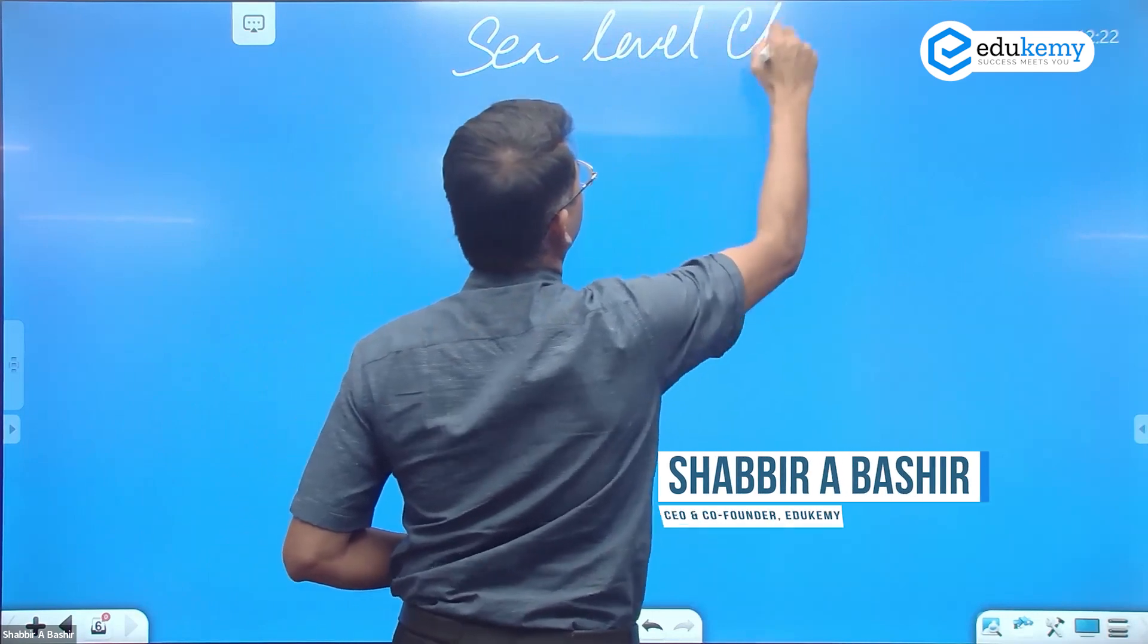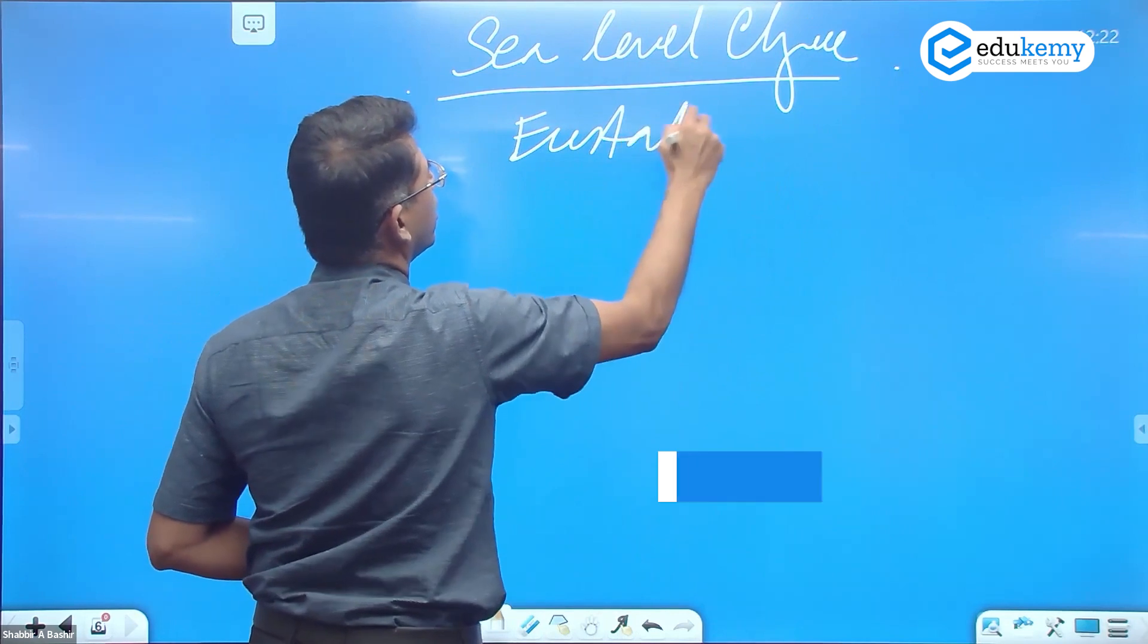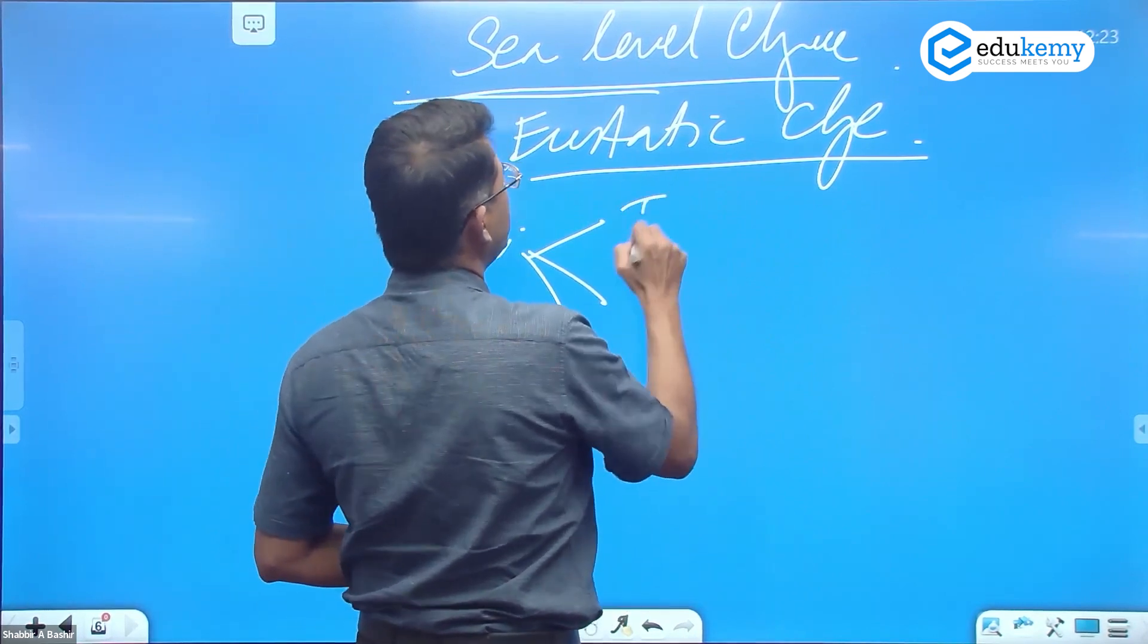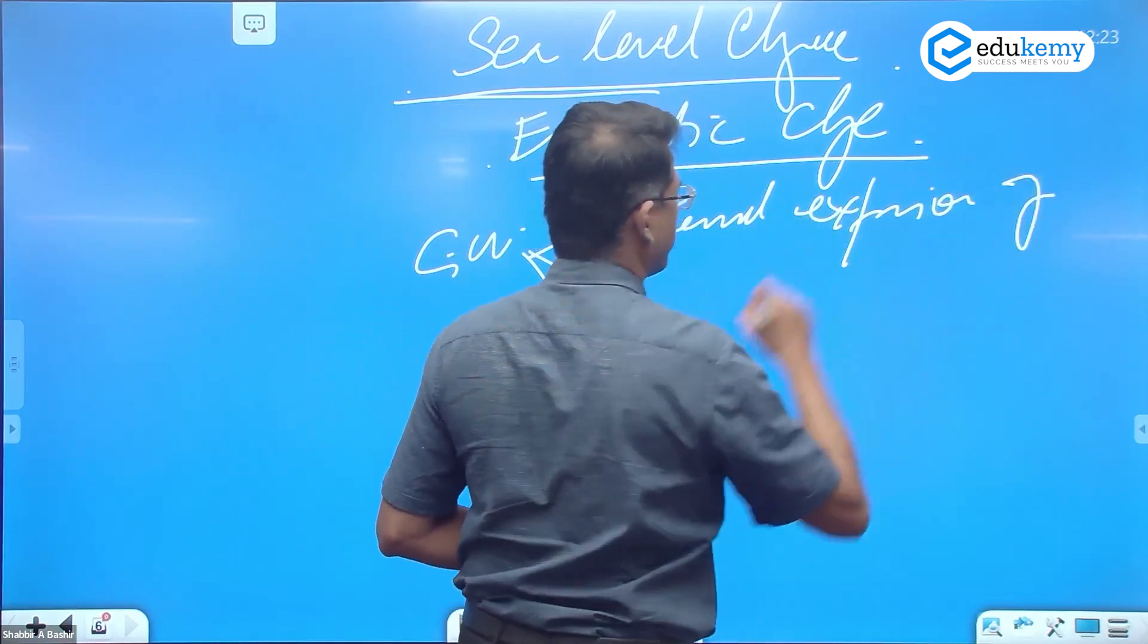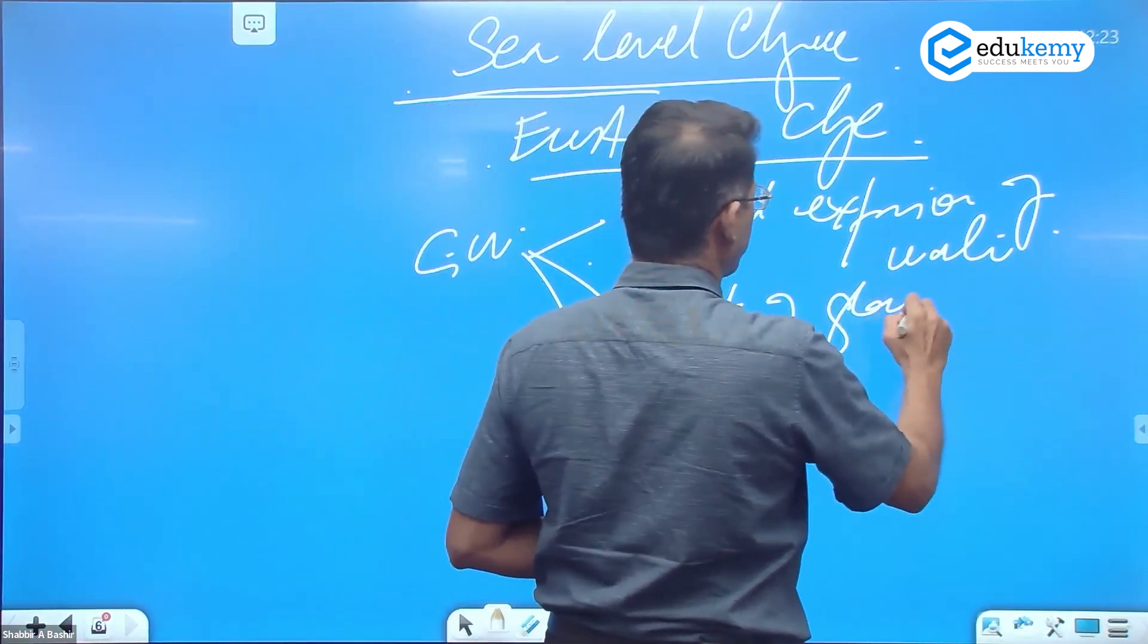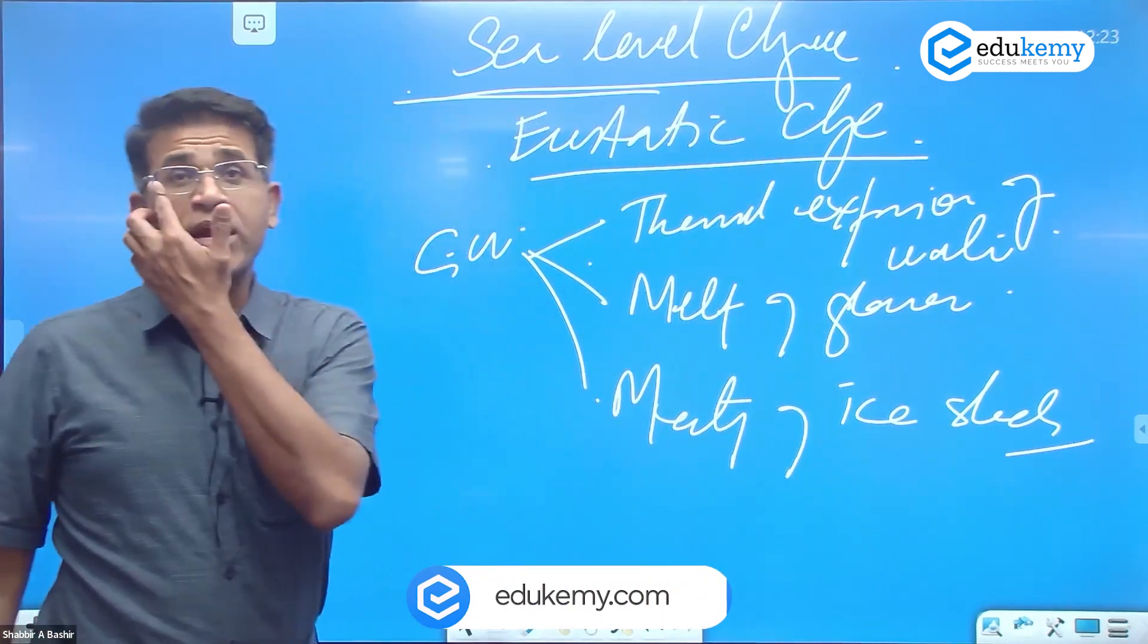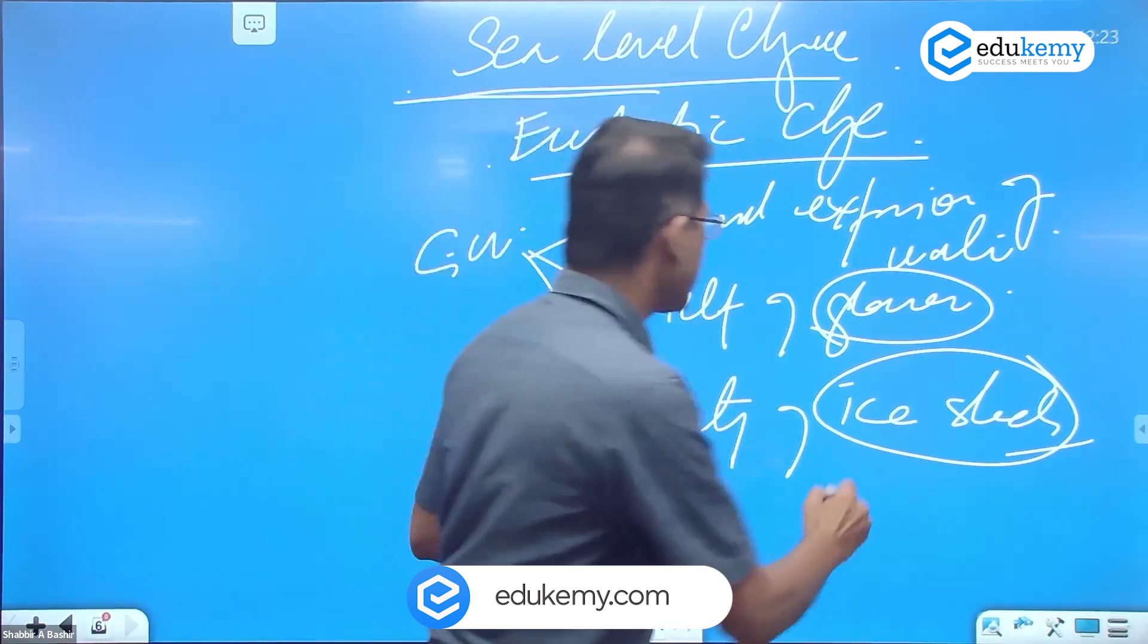Sea level change, we call sea level change as eustatic change. Global warming does three things: it results in thermal expansion of the waters, it results in melting of the glaciers, it results in melting of the ice sheets. I hope you can differentiate glacier kya hai or ice sheet kya hai.